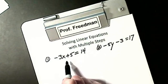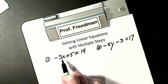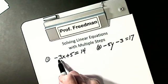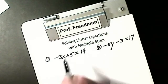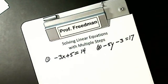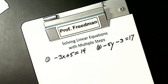X is not alone. I have a negative 3 and I have a 5. I have to get rid of the negative 3 or the positive 5 to get it alone. Which one do I do first?